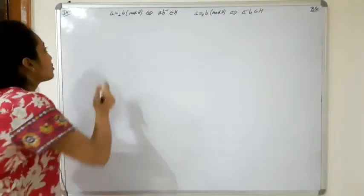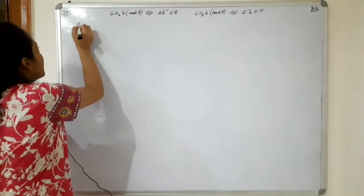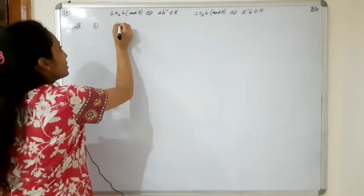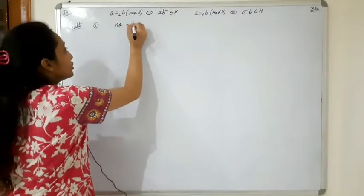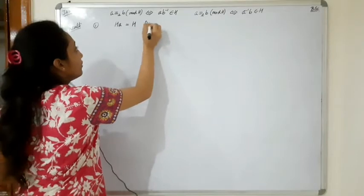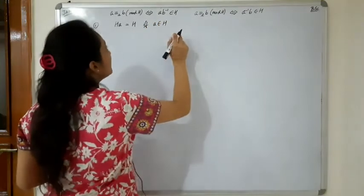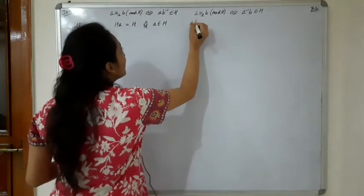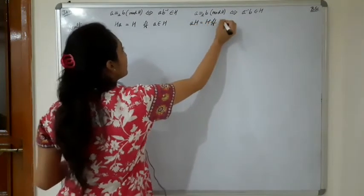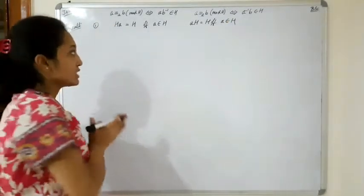Now we can prove some results. The first result is that Ha is equal to H if and only if a belongs to H. And similarly, aH is equal to H if and only if a belongs to H.